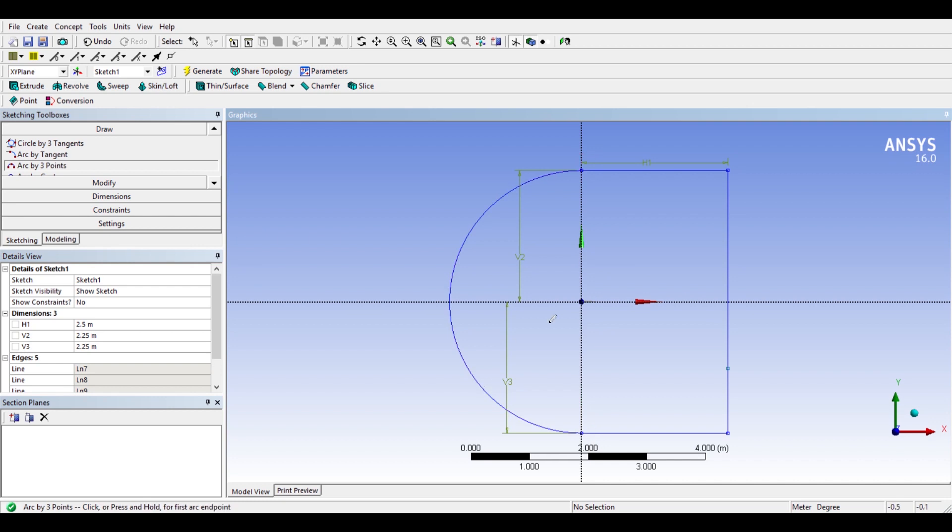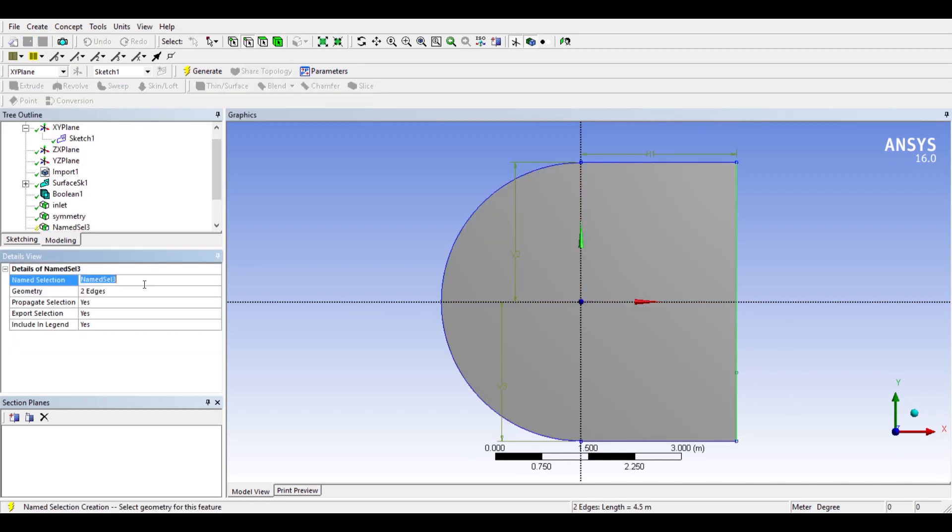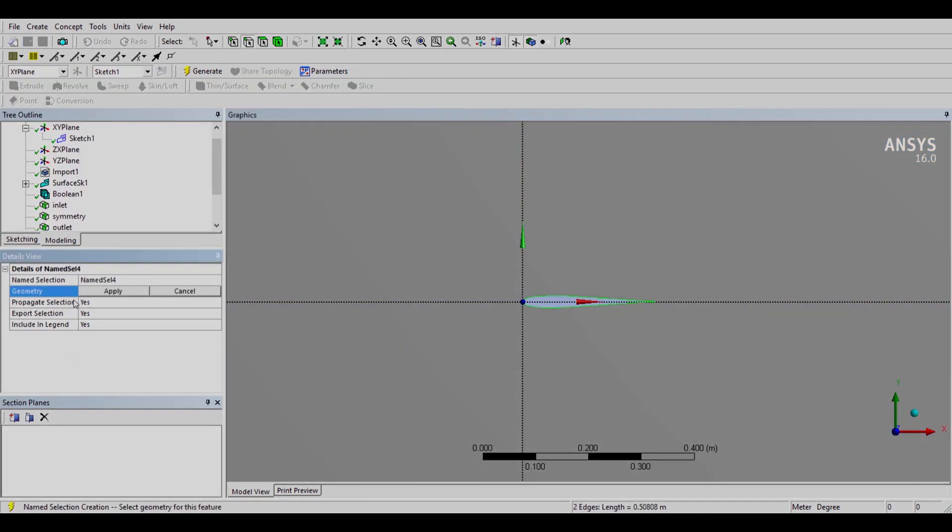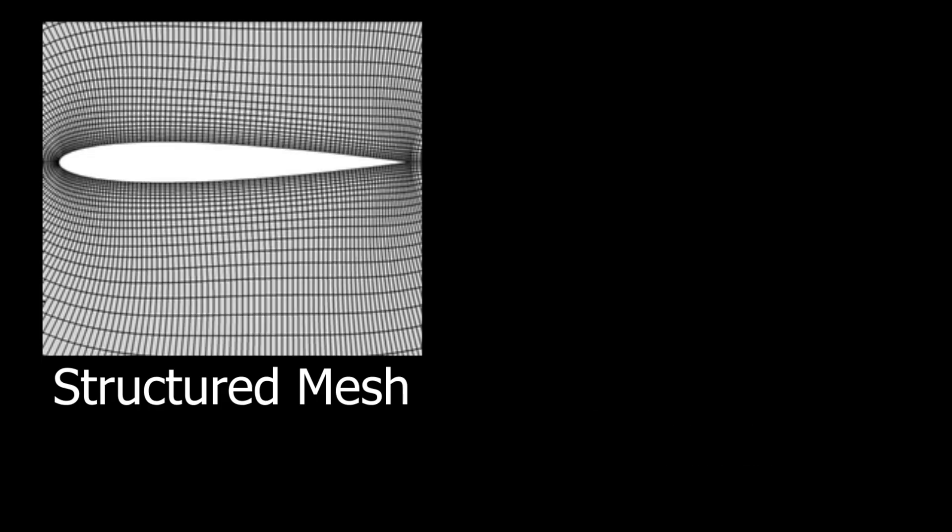And for a detailed understanding of how to do each of these steps, there are a lot of tutorials online that you can watch. Next, we have to choose the type of element in your mesh. This will decide whether your mesh is structured or unstructured.